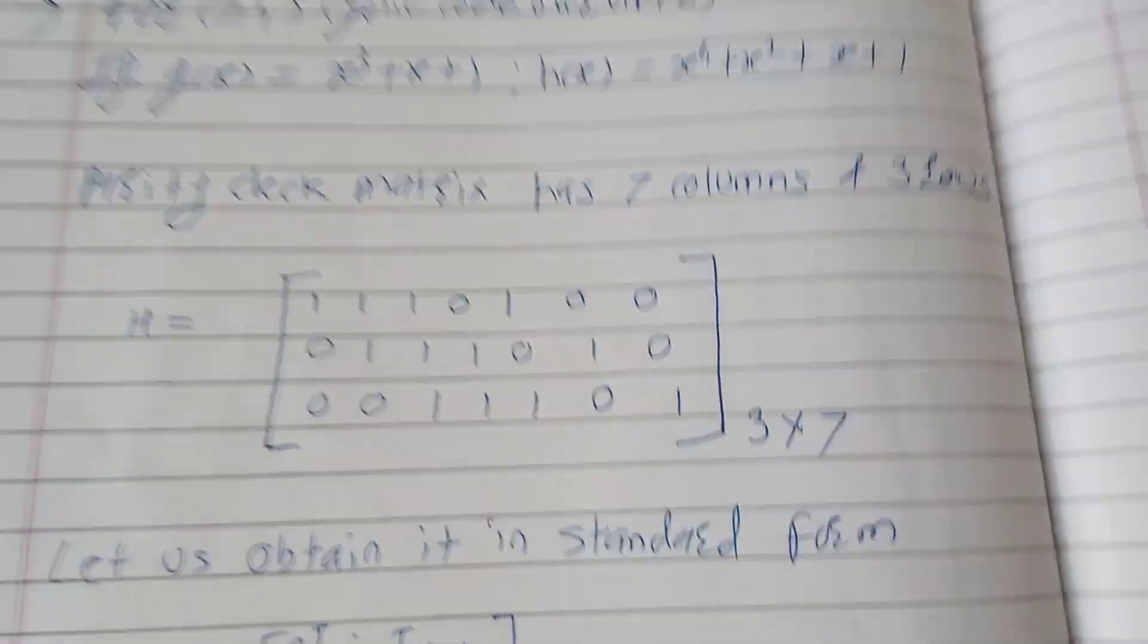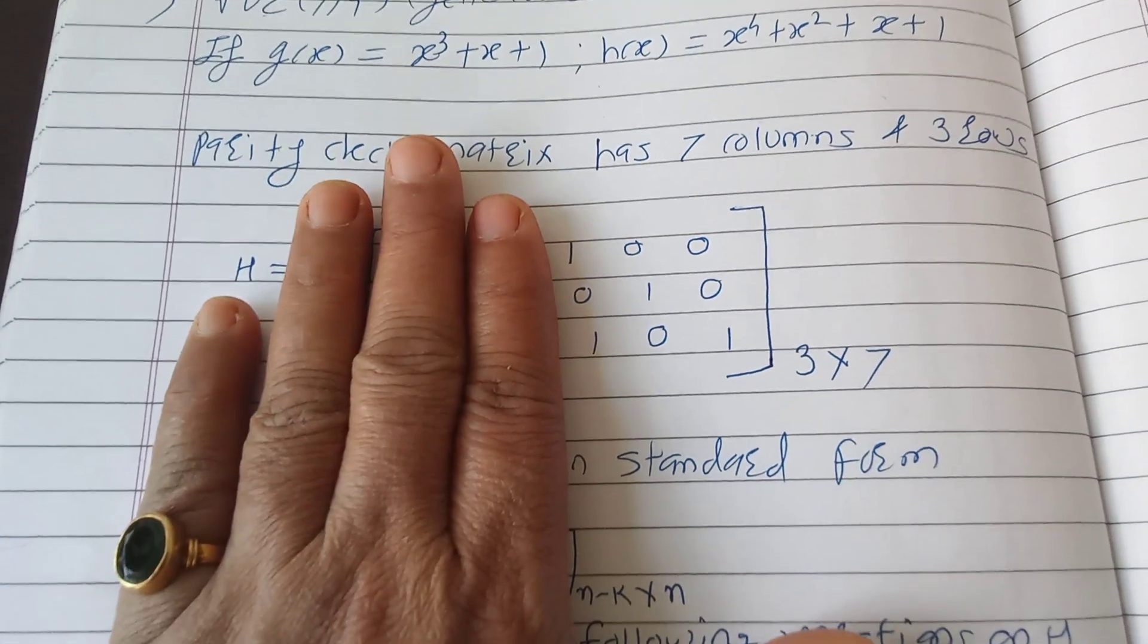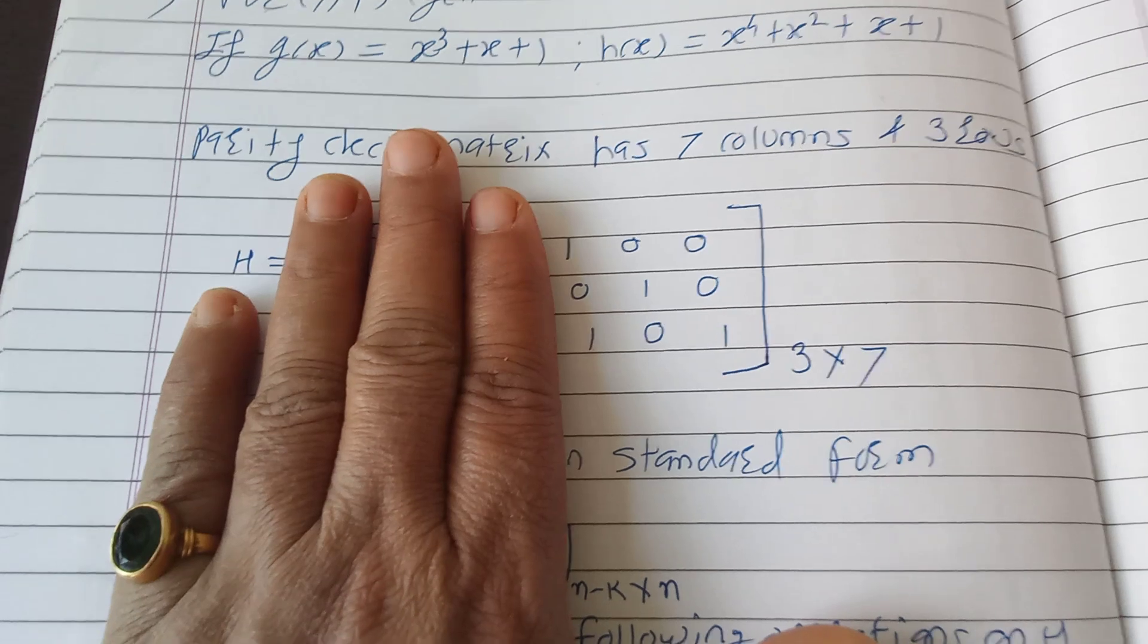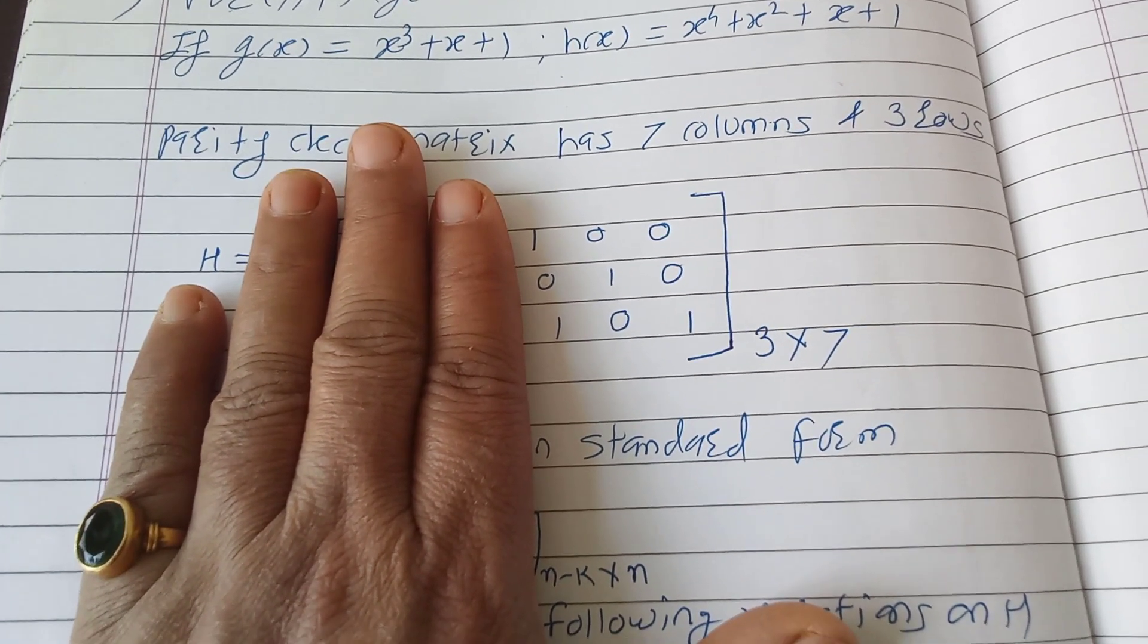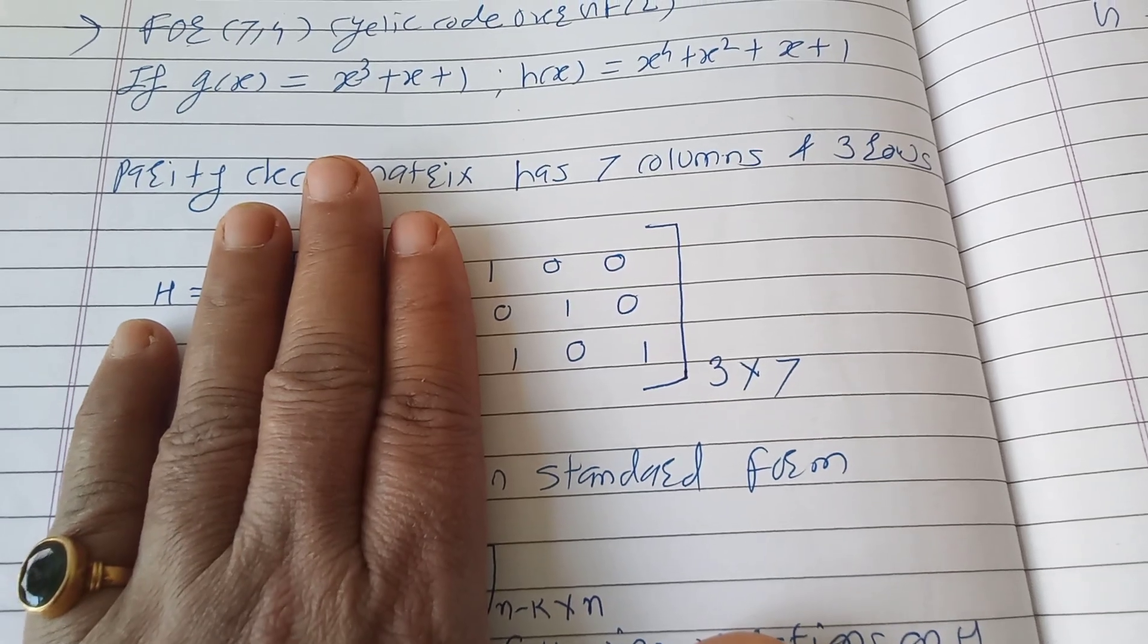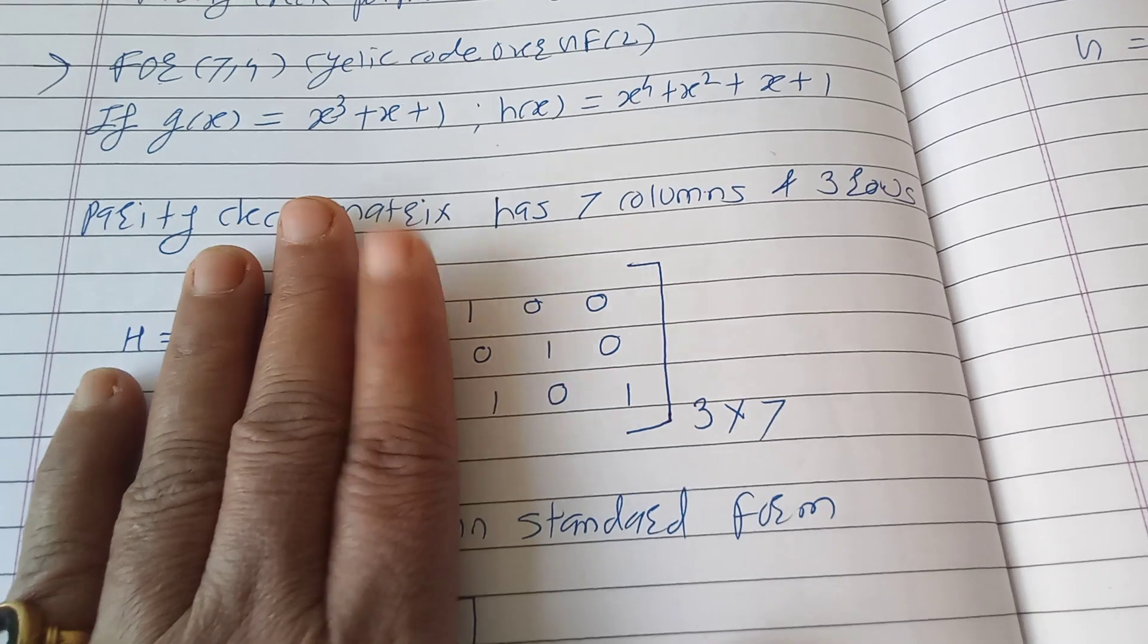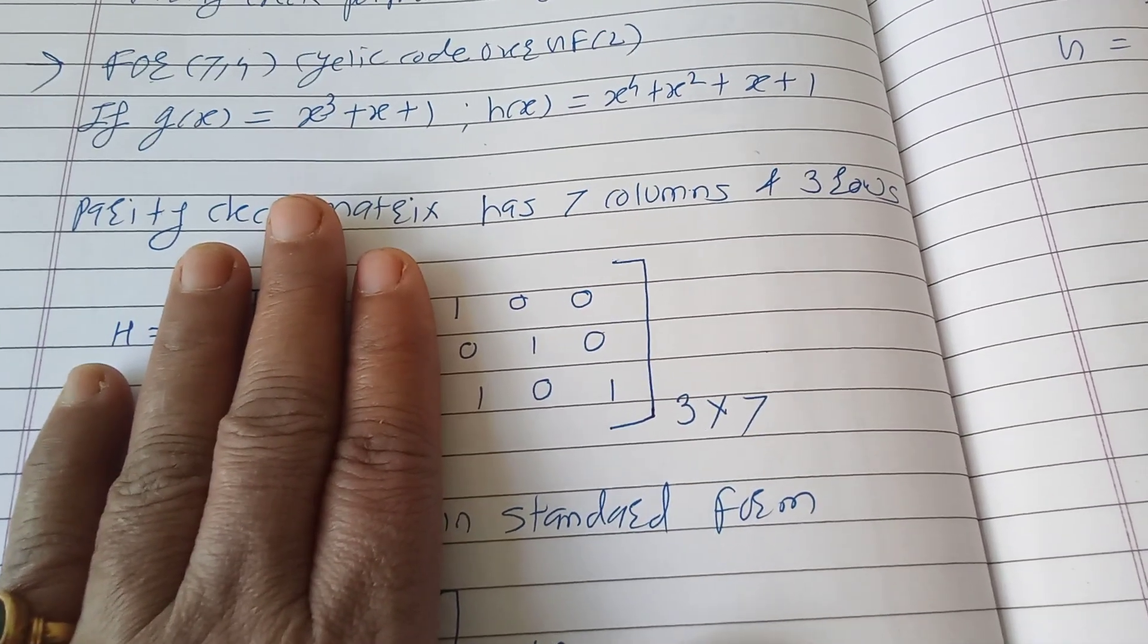But it is not in standard form. To get the standard form we need at the last of this H matrix an identity matrix which is of the dimension N - K. That is equal to 7 - 4, that is equal to 3. So you want here 3 by 3 matrix at the last of this matrix.